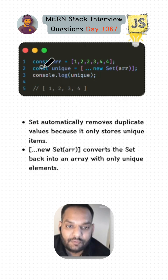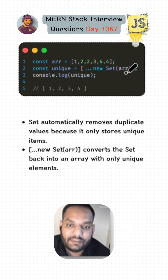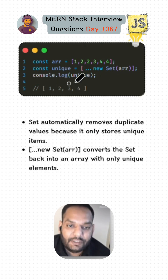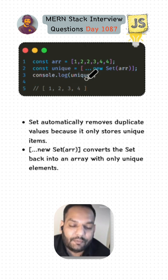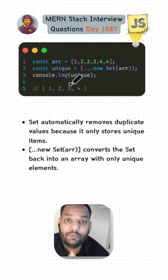We have a 'const unique' variable, then square brackets with three dots followed by 'new Set(arr)', where 'arr' is our array. Finally, we have 'console.log(unique)', and here we have our desired output showing all the unique values in the array.